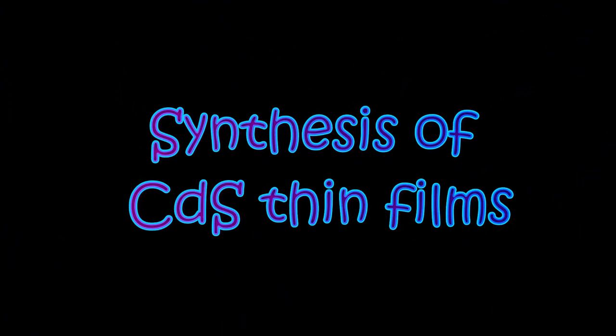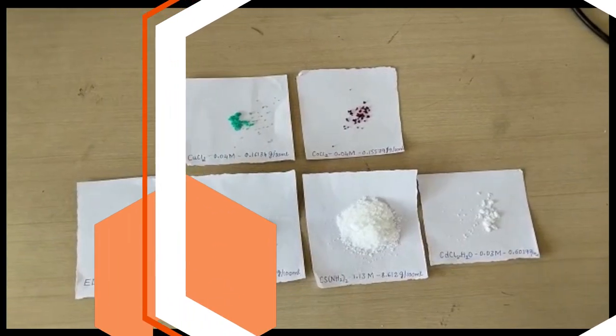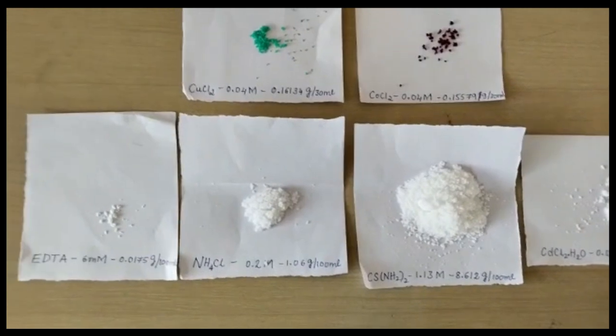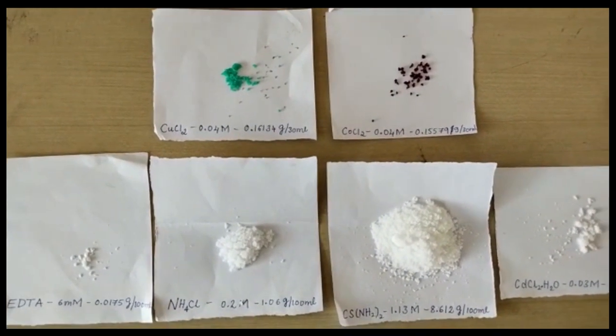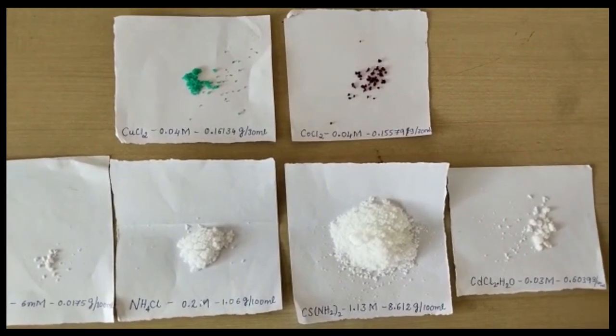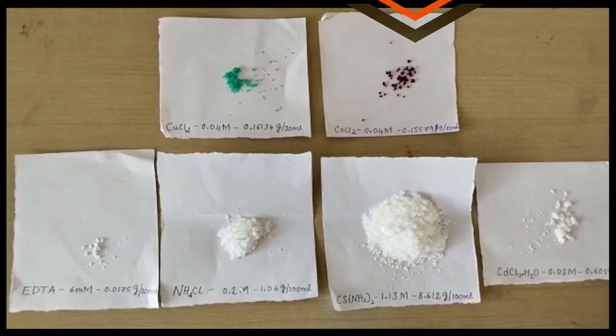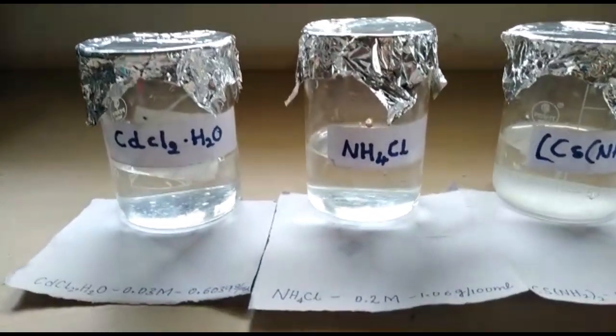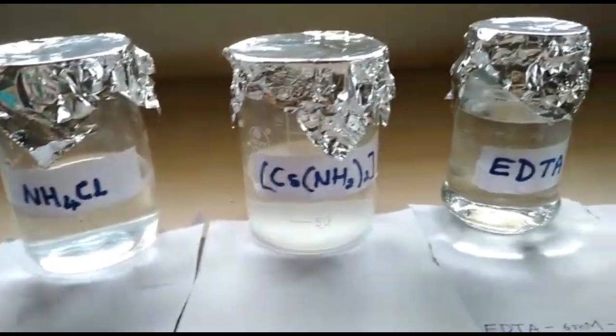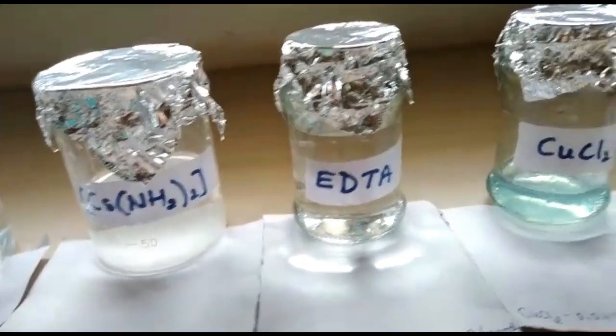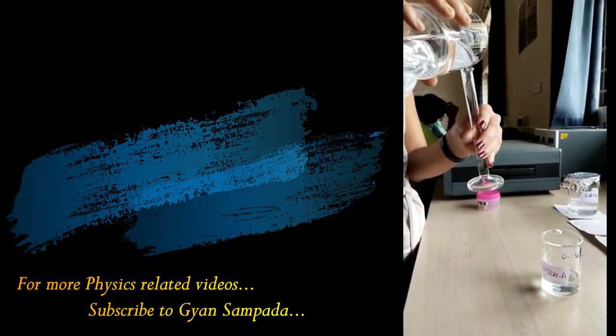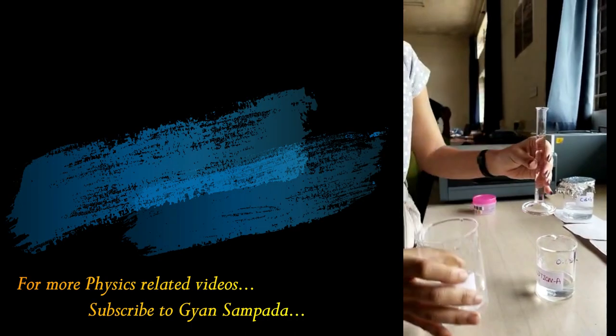We are going to see how we can deposit or synthesize cadmium sulfide thin films. For this, the precursors used are cadmium chloride, thiourea, ammonium chloride, and EDTA. For doping, copper chloride and cobalt chloride are used. In order to deposit the thin film, we need to prepare corresponding solutions of these precursors.